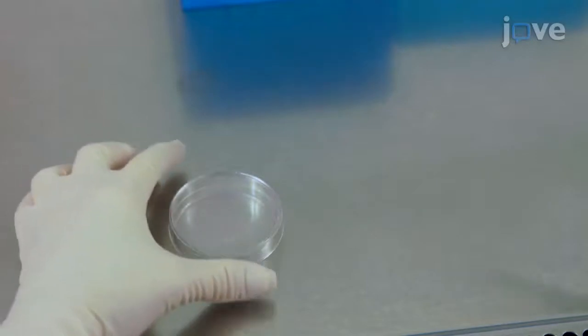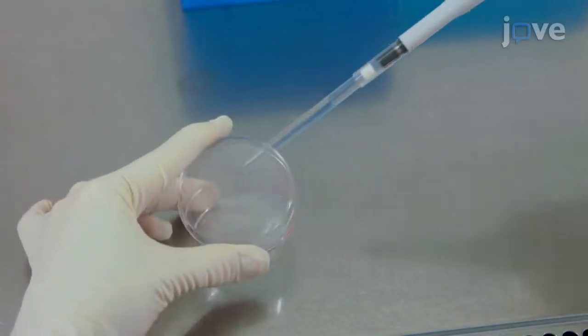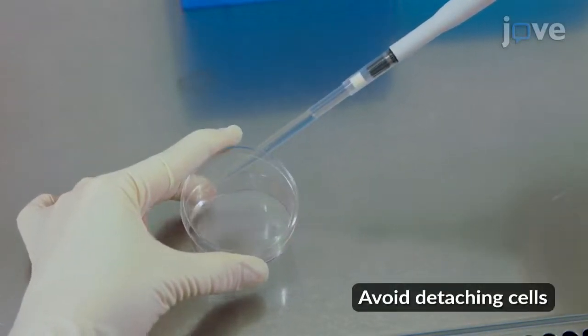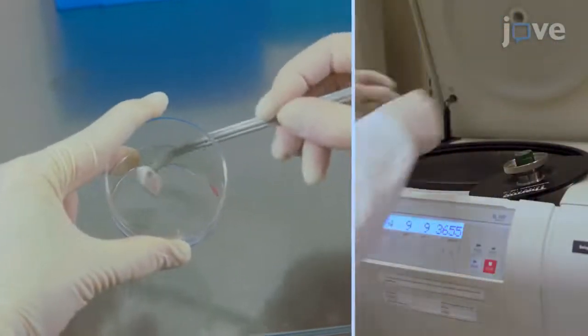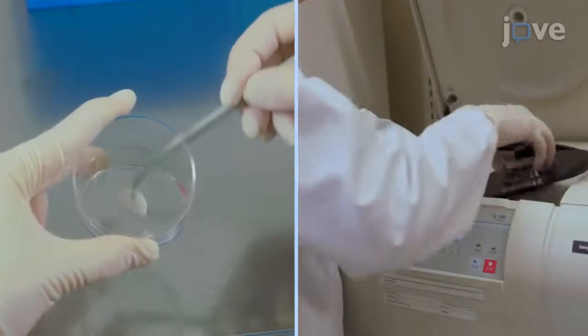To prepare the mitochondrial lysates, first use ice-cold PBS solution to gently wash the cells once. Scrape the cells and pellet them at 4 degrees Celsius at 800g for 10 minutes.